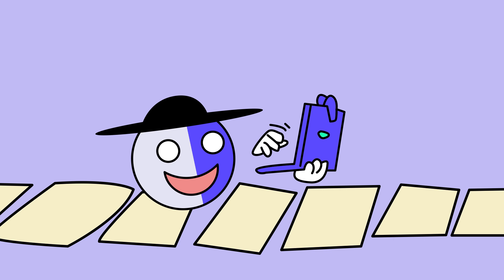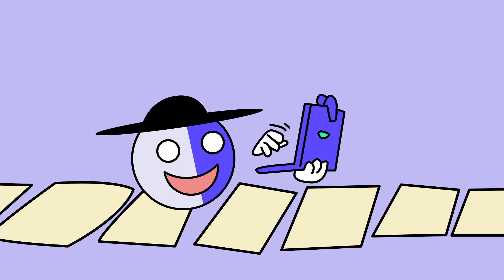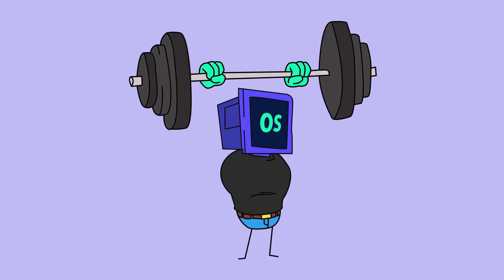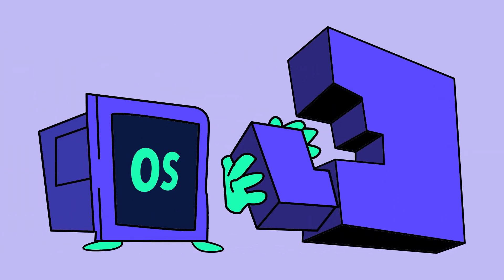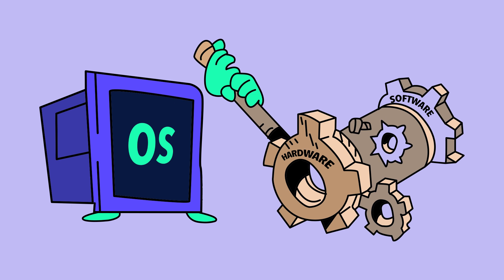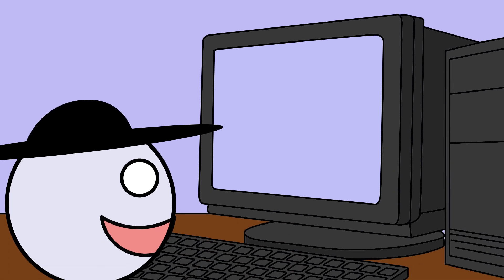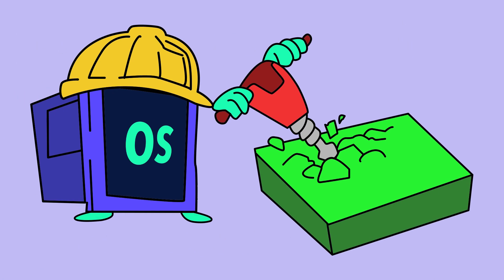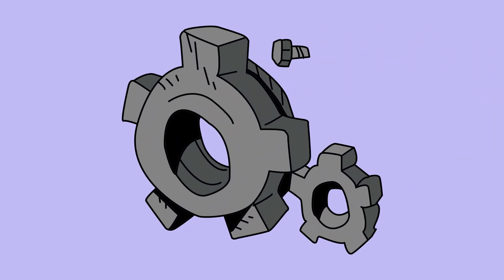Thanks to the OS, developers don't need to worry about the nitty-gritty hardware details. The OS abstracts all that complexity, so you can just write code and let the OS handle the heavy lifting. And lastly, the OS ensures compatibility, providing a consistent environment where your software can run smoothly across different hardware systems. So next time you boot up your computer, remember — your OS is on the job, making sure everything runs like clockwork.